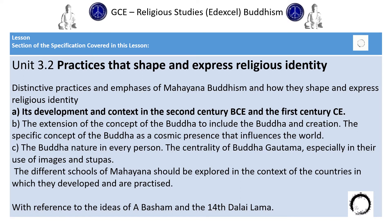In this part of the course we need to cover, in unit three, practices that shape religious identity — the distinctive practices and emphasis of Mahayana Buddhism, how they shape and express religious identity. So we're going to think about today Mahayana's development and its context in the second century before the common era and its development through to the first century in the common era.